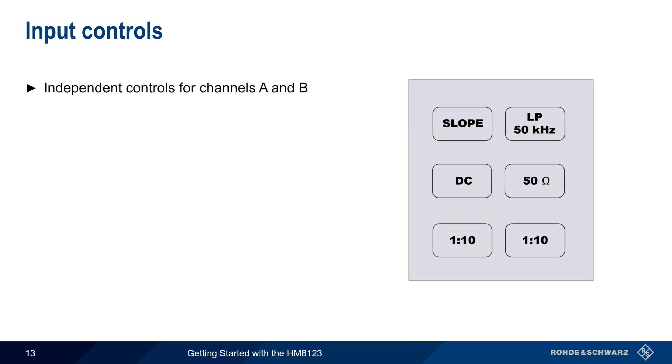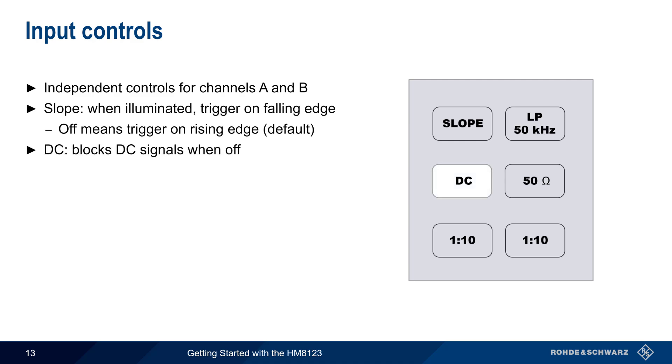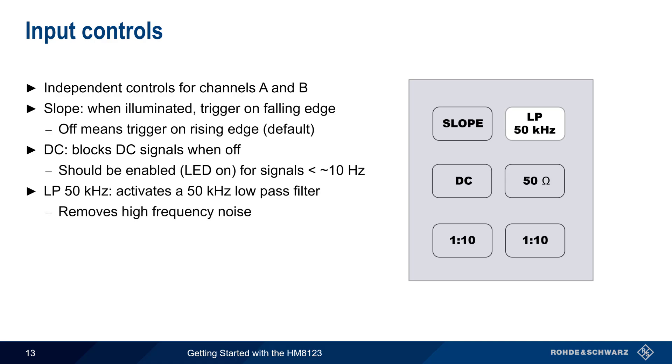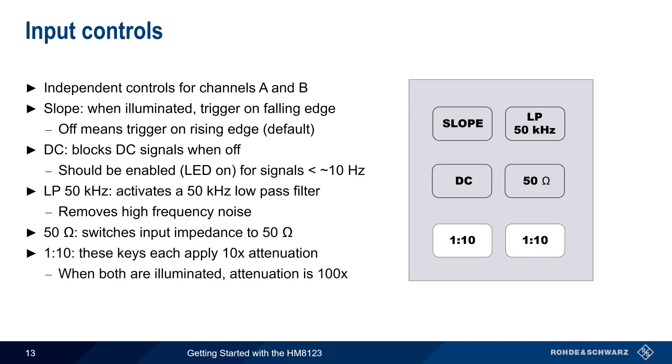Independent input controls are provided for both channel A and channel B. When illuminated, the slope key indicates that triggering is being done on the falling edge of the input signal. When the LED is off, then triggering is being done on the rising edge, which is also the default. The DC key blocks DC signals when off, but it should be enabled when measuring signals with a frequency of less than approximately 10 hertz. The LP 50 kilohertz key activates a 50 kilohertz low-pass filter, which can be used to remove high frequency noise on the input signal. The 50 ohm key changes the input impedance from 1 megaohm to 50 ohms. And finally, the two 1/10 keys each attenuate the input signal by a factor of 10. If they are both enabled, the total attenuation factor is 100. Keep in mind that proper signal attenuation is important for accurate measurement results.